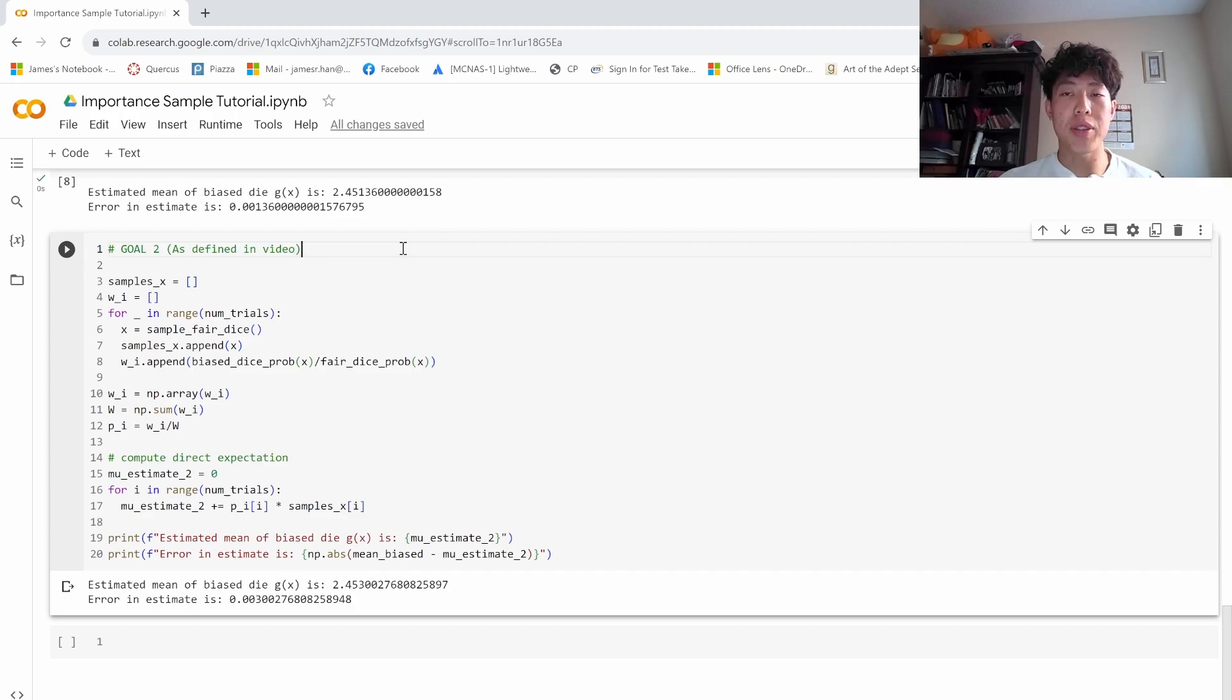So let's repeat the same process by using the second method that we just learned. So we want to transform one set of points into another set of points, and then use the second set of points in order to estimate the expected value. So here we have the samples of x, and we're going to keep track of all the w's.